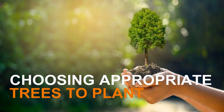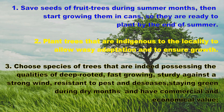Choosing appropriate trees to plant: to choose the appropriate trees to plant, consider the following. Collect seeds of fruit trees during summer months, then start growing them in cans so that they are ready to plant by the end of summer. Choose trees that are indigenous to the locality to allow easy adaptation and ensure growth. Also choose species that are deep-rooted, fast growing, sturdy against strong wind, resistant to pests and diseases, stay green during dry months, and have commercial and economical value.